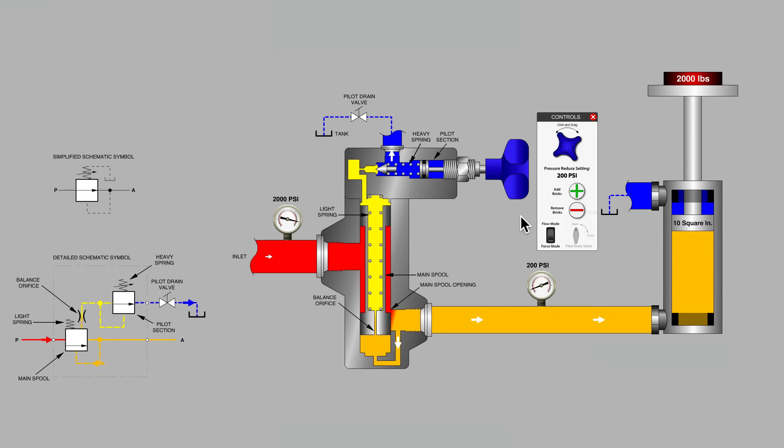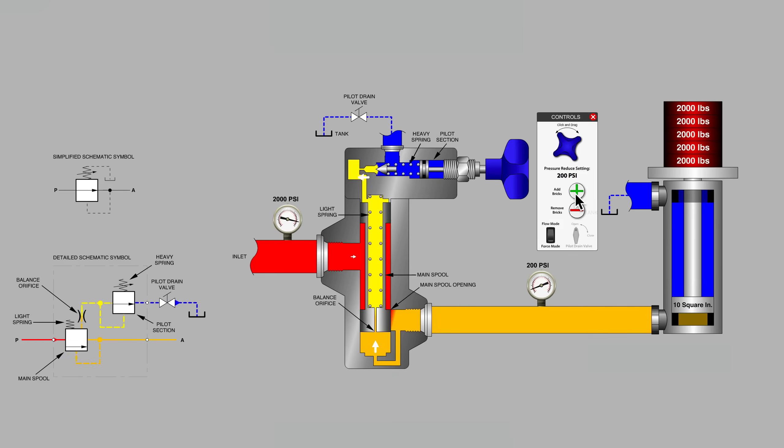A pressure-reducing valve is used to step down a higher system pressure to a lower maximum value in a downstream sub-circuit. The internals of the valve don't really become active until there is considerable resistance on the outlet.